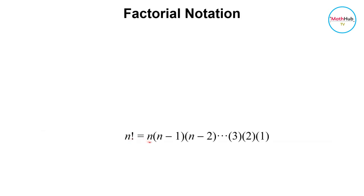n factorial is equal to n times n minus 1 times n minus 2 and so on until you have 3 times 2 times 1. Essentially, you are subtracting 1 starting from n and you keep repeating that until you reach 1. As a special rule, 0 factorial by definition is equal to 1.